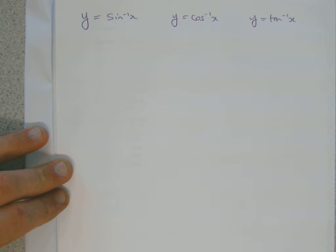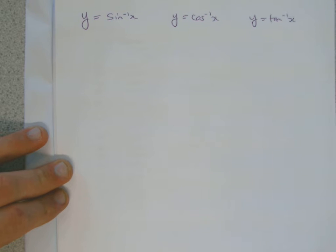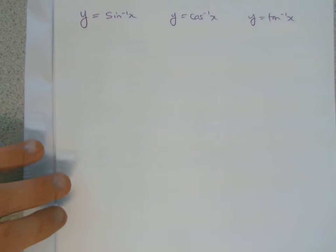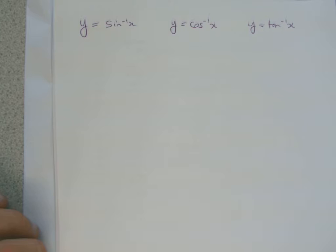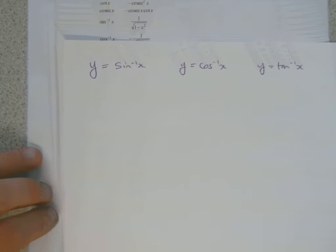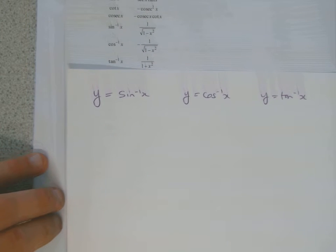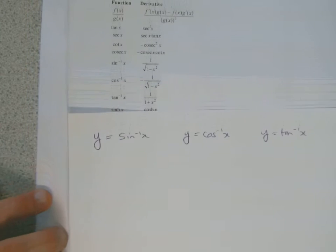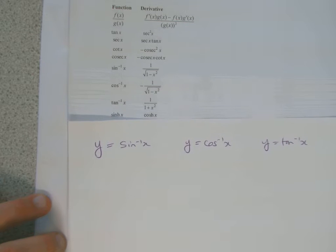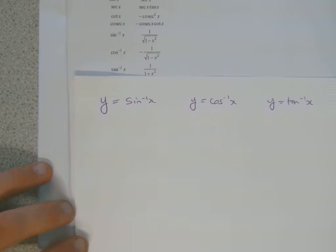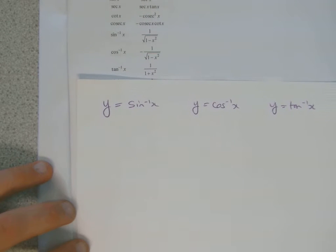We've got the inverse trig functions here, and in order to differentiate these, we need to use the results in the formula booklet. The results are there for us already, so we don't have to remember them. In the formula booklet, if I look down here, there they are on the differentiation page at the top. So quite simply, I can write them down.